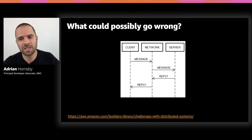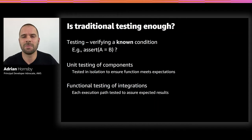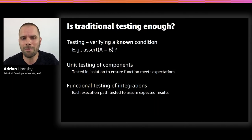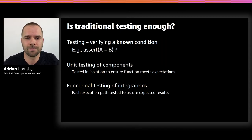One way to approach distributed engineering is to distrust everything — and of course, test. But while testing is mandatory, it doesn't really apply well for distributed systems and often doesn't address the complexity of production environments. Furthermore, testing really verifies only known conditions. What about all the random failures? What about the intermittent errors? How about configuration drift? And what about the unknowns?